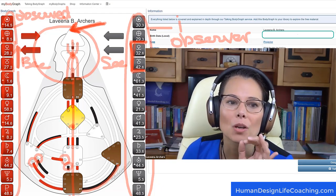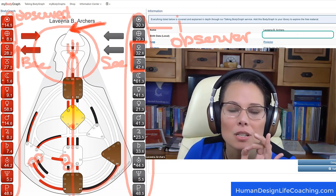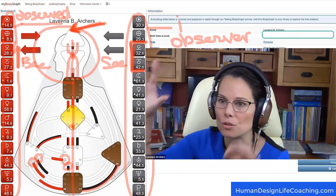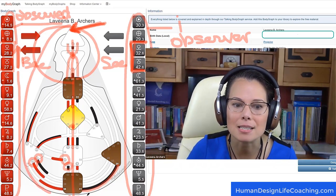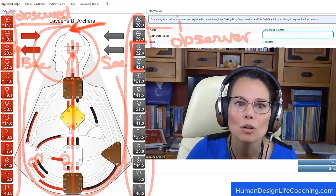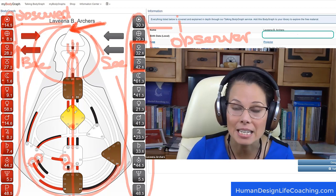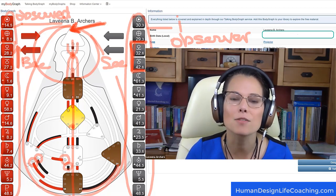So we have the observer, the observed, and the process of observation between the observer and observed is this right here. Your body graph is the map that shows you what you're experiencing, expressing, learning, being, doing in this life. That's the process of observation.